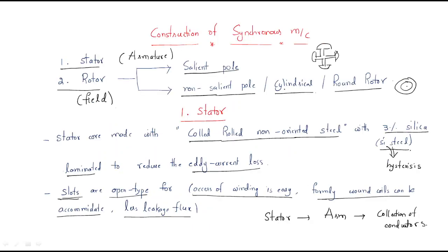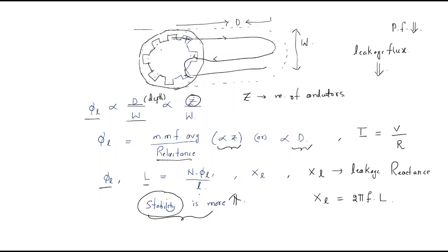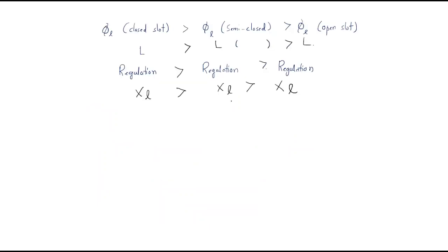This concludes the stator construction of the synchronous machine. To recollect: the stator core is manufactured with cold rolled non-oriented steel, three percent silica is added to reduce hysteresis loss, lamination is done to reduce eddy current losses, and open type slots are used for easy winding access. I hope all of you understood the session. Thank you.